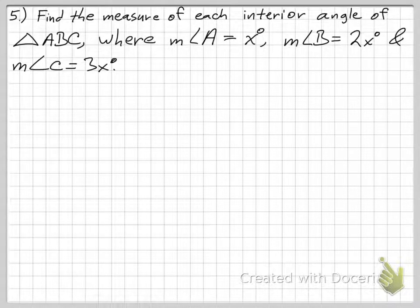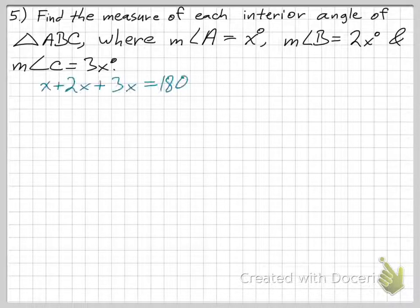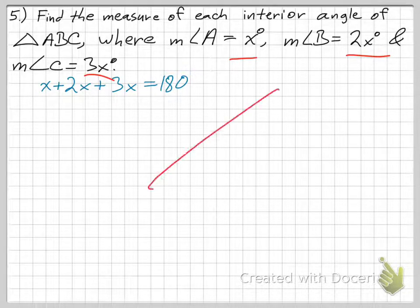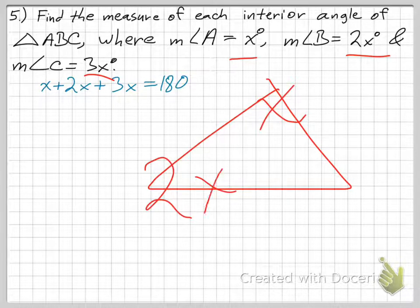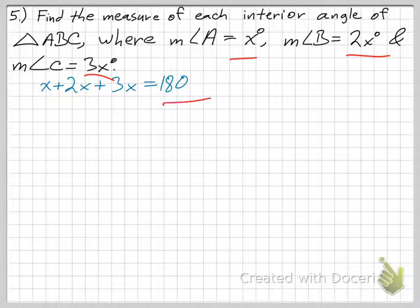Next problem: find the measure of each interior angle of triangle ABC, where angle A equals x degrees, angle B equals 2x degrees, and angle C equals 3x degrees. By the Triangle Sum Theorem, x plus 2x plus 3x equals 180 degrees.